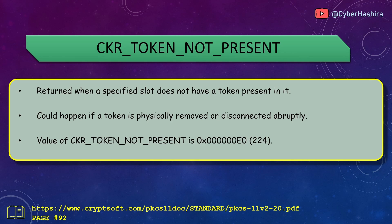CKR_TOKEN_NOT_PRESENT is returned when a specified slot does not have a token present. Abrupt removal or disconnection of a hardware token such as a smart card, USB token, or HSM could cause this problem. One way to prevent it is to call C_GetSlotList with token present set as true. Its value is 0xE0 and is on page 92.